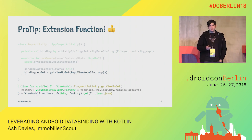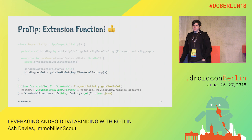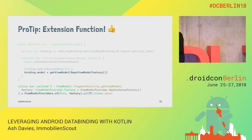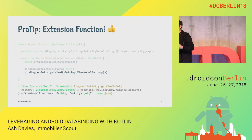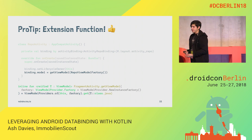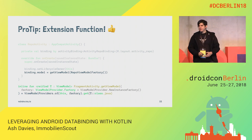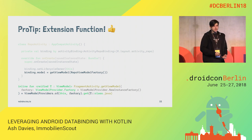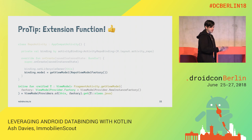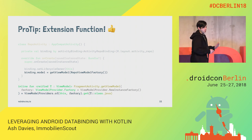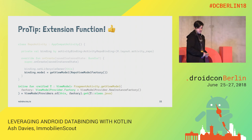I'm using the ViewModelNewInstanceFactory here. This is a default factory that will try to instantiate the view model if it has a no-argument constructor. It's generally not safe to rely on this, so I would advise not using it — but it's there if you can assert that you have no arguments in your constructor.